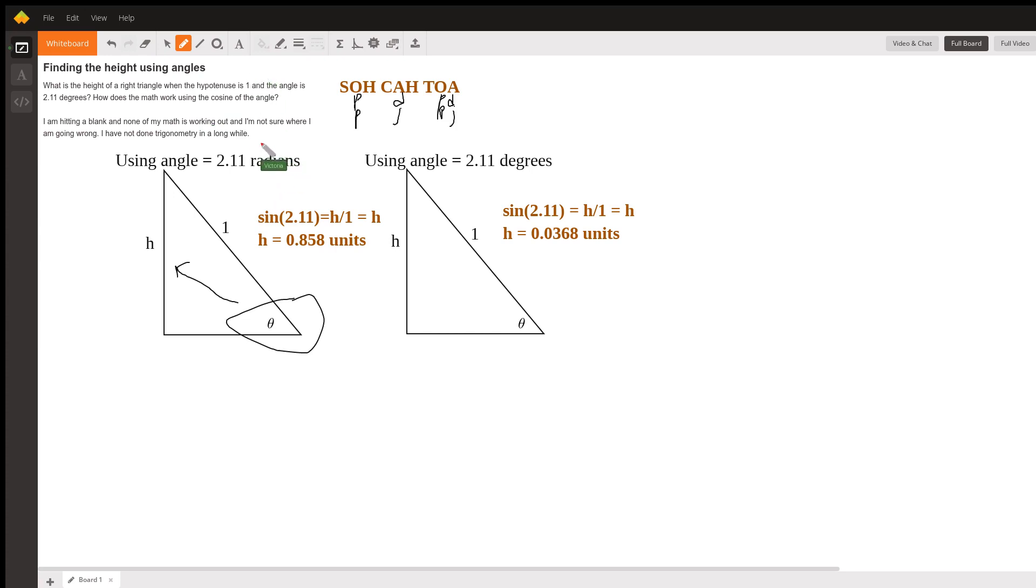Use this angle as 2.11 radians and then this is your height, and we got it using sine, not cosine.